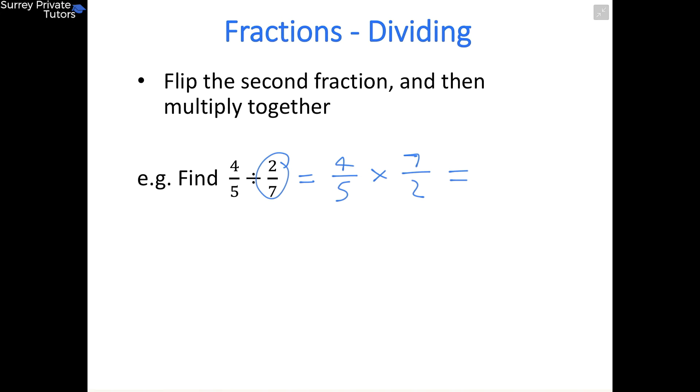And from here onwards it's exactly the same as multiplying fractions together as normal. So the top will be 4 times 7, which is 28, and the bottom will be 5 times 2, which is 10.